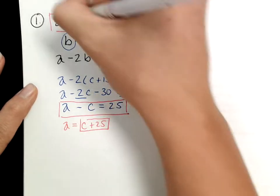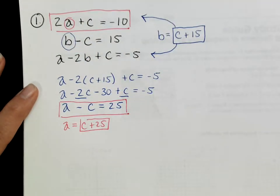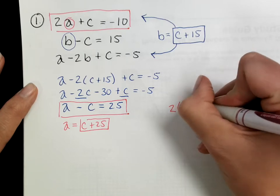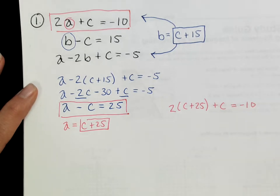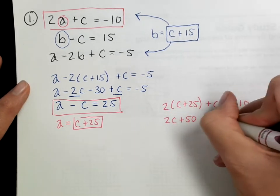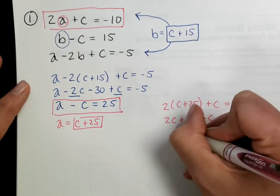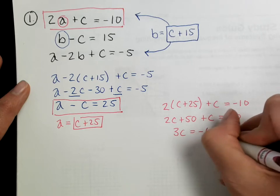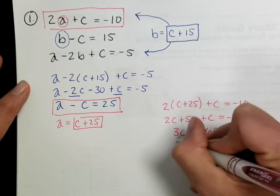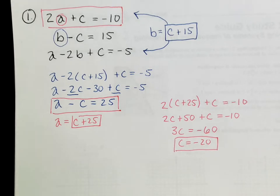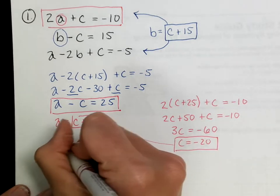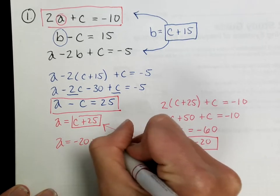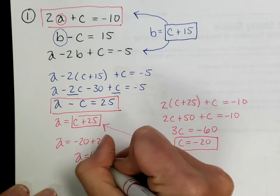When I plug a = c + 25 into the first equation, I get 2(c + 25) + c = negative 10, which gives 2c + 50 + c = negative 10, so 3c = negative 60, meaning c = negative 20. Plugging c back in: a = negative 20 + 25 = positive 5.